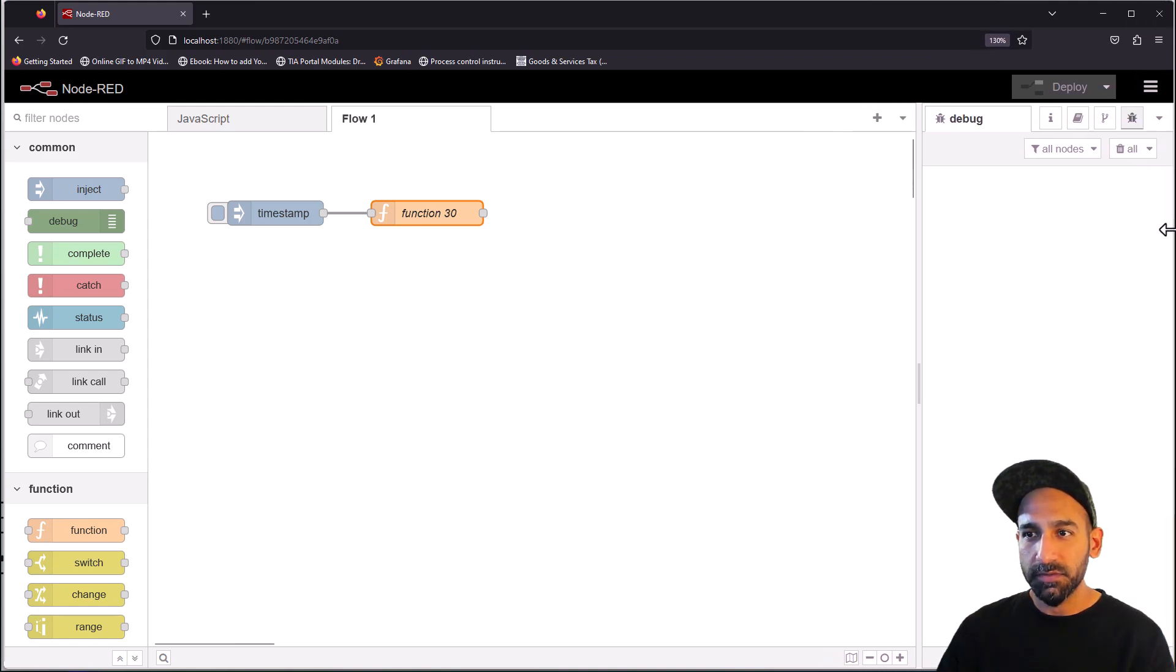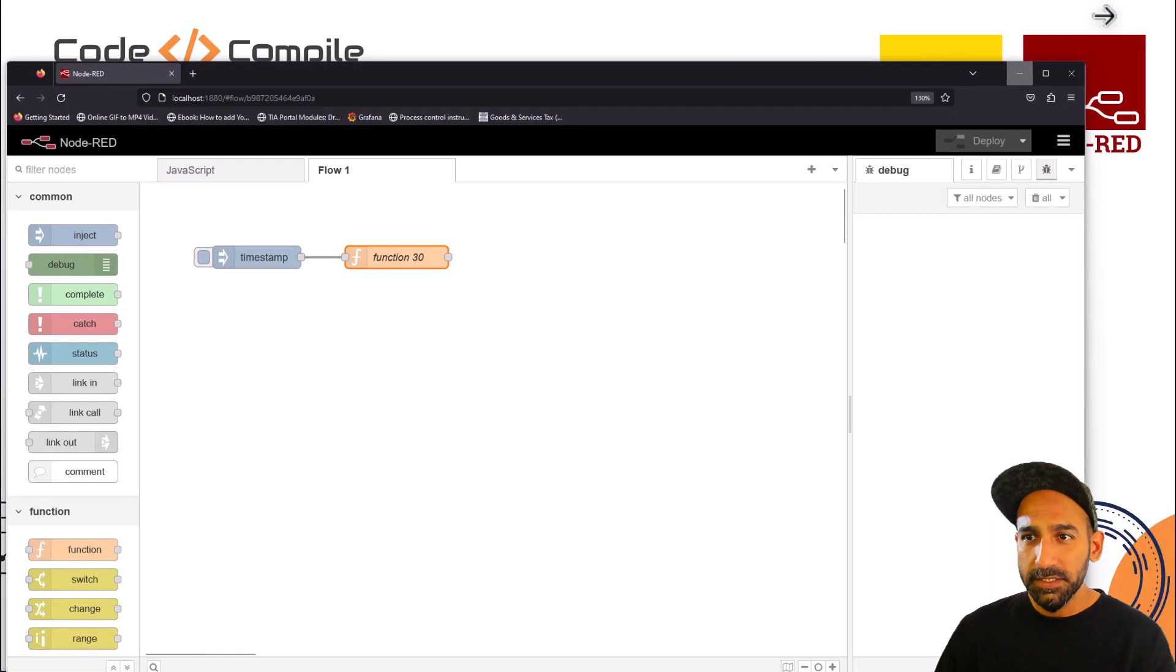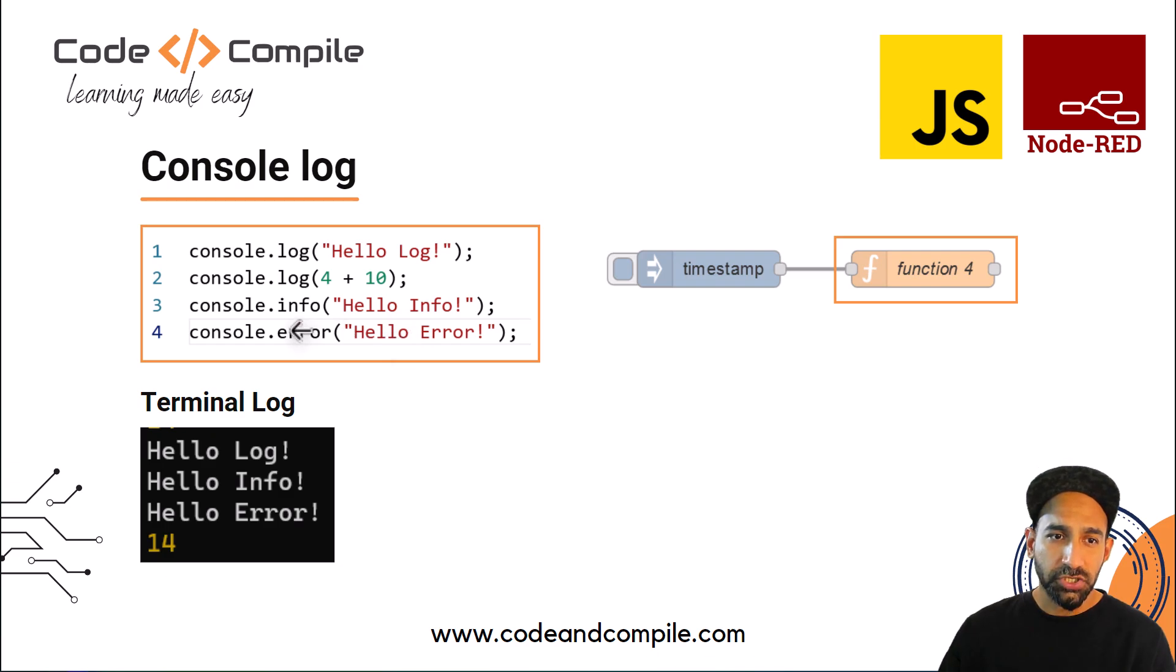For example, if I want to show hello code and compile in debug window, you have to bring that to message payload and return the message. We'll do some examples showing results in debug window and some in console.log. It's just how you display your output.